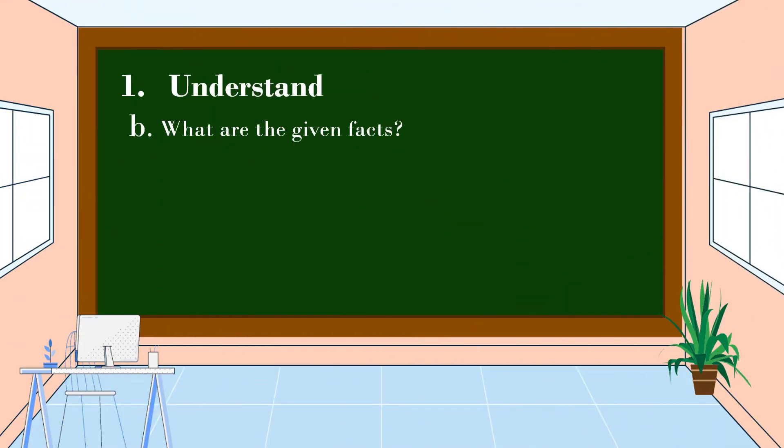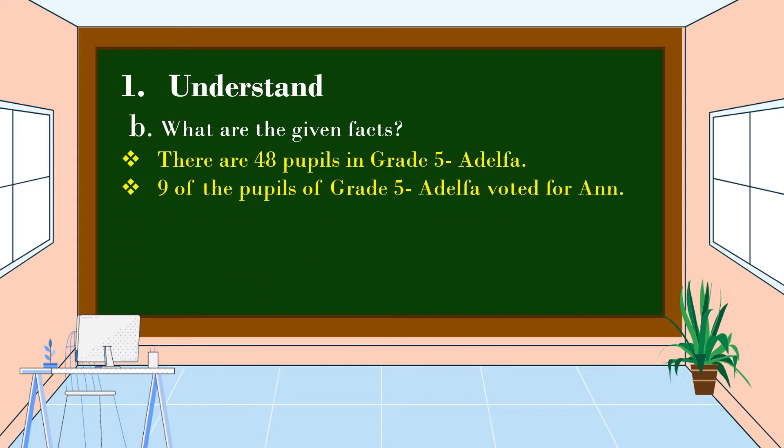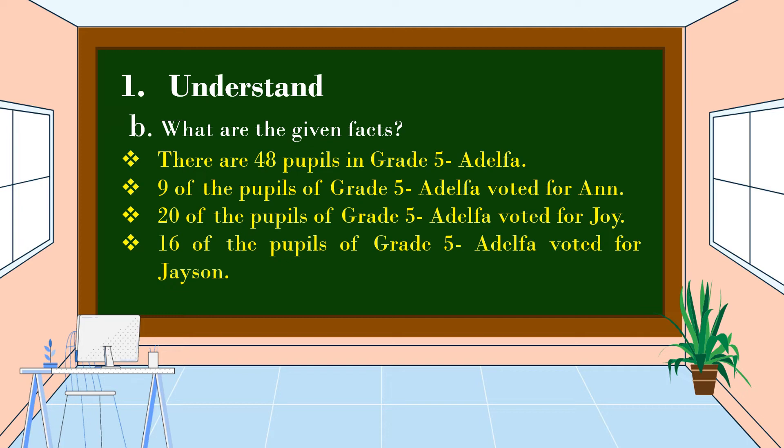What are the given facts? The given facts are: there are 48 pupils in Grade 5 Adelpha. 9 of the pupils voted for Ann, 20 voted for Joy, and 16 voted for Jason.